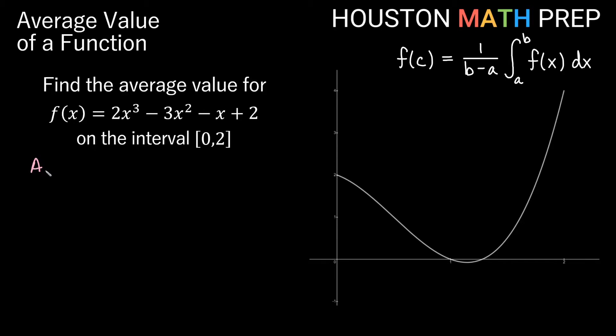So our average value for this function is going to be 1 over b minus a, so in this case it would be 1 over 2 minus 0, because I have a equals 0 and b equals 2 here, that's my interval, times the integral from 0 to 2 of my function, which is 2x³ - 3x² - x + 2, all of that dx. Now each of these are power rules, so this antiderivative is not so bad to do.